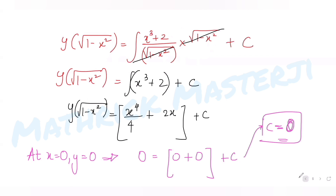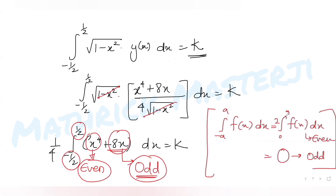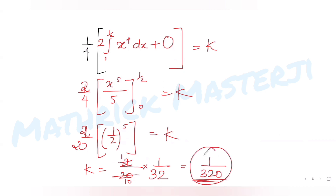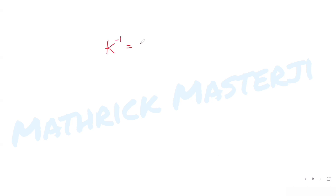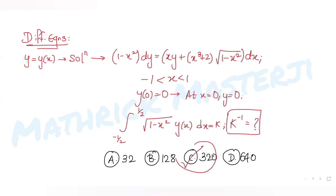Correcting for the factor of 2 from the even function rule: k = (1/4) · 2 · (1/5) · (1/32) = 2/(4 · 5 · 32) = 1/320. Taking the reciprocal, k⁻¹ = 320, which matches option C. So C is the correct answer.